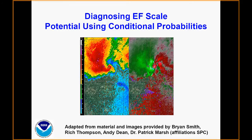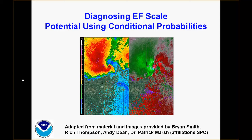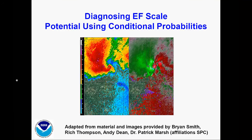Thanks John, and good morning to everyone, and thanks for attending. This presentation will be about creating an operational application for diagnosing EF scale potential using conditional probabilities and low-level rotational velocities. The work is adapted from recent studies in 2012 and 2014 by Brian Smith, Rich Thompson, Andy Dean, and Patrick Marsh, all affiliated with SPC. Their most recent study has been submitted to Weather and Forecasting. You can find it on the Central Region IBW Training Google site. It's really good — groundbreaking in many ways.